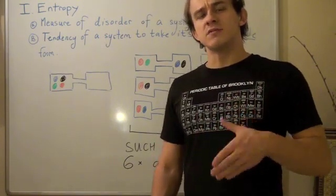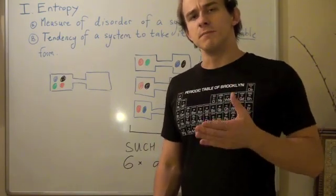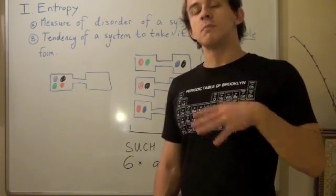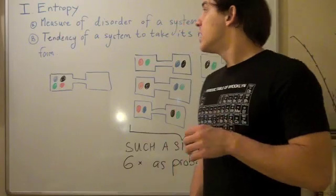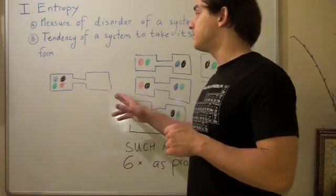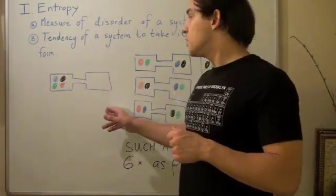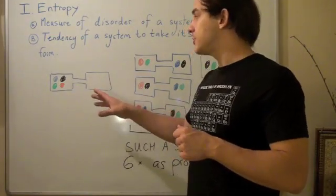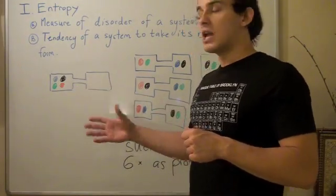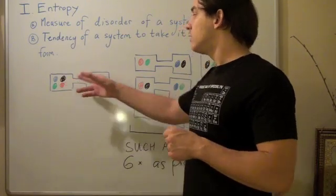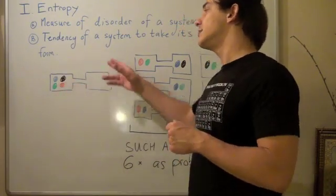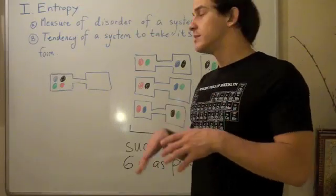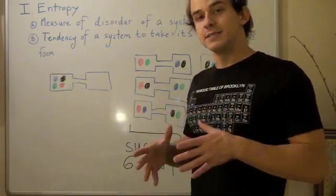So let's explore the concept of entropy using probability, and maybe we can come up with a better definition using probability. So let's look at this system here. This system is composed of two containers connected by a bridge, and within the container there are four different molecules. These molecules are allowed to diffuse from one side to the other side. So let's see what's the most probable situation that we can get.